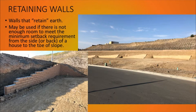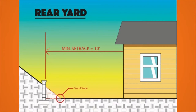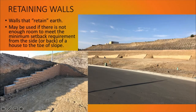Another type of wall to mention is retaining walls. They're used for different reasons, but one main reason is when there's not enough room to meet the minimum setback requirement from the side or back of a house to the toe of slope. For example, if the city or county requires a minimum setback of at least 10 feet but the 10 feet goes way beyond the toe of slope, you'd have to install a retaining wall right there so that portion of the slope is gone and you can now meet your minimum 10-foot setback.